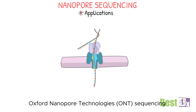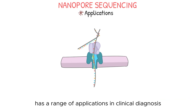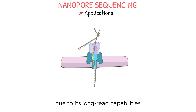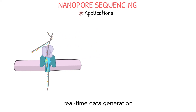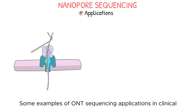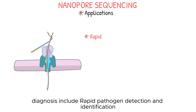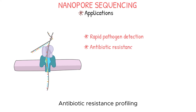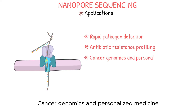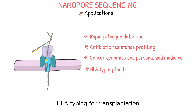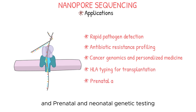Oxford Nanopore Technologies, or ONT sequencing, has a range of applications in clinical diagnosis due to its long read capabilities, real-time data generation, and portability. Some examples of ONT sequencing applications in clinical diagnosis include rapid pathogen detection and identification, antibiotic resistance profiling, cancer genomics and personalized medicine, HLA typing for transplantation, and prenatal and neonatal genetic testing.